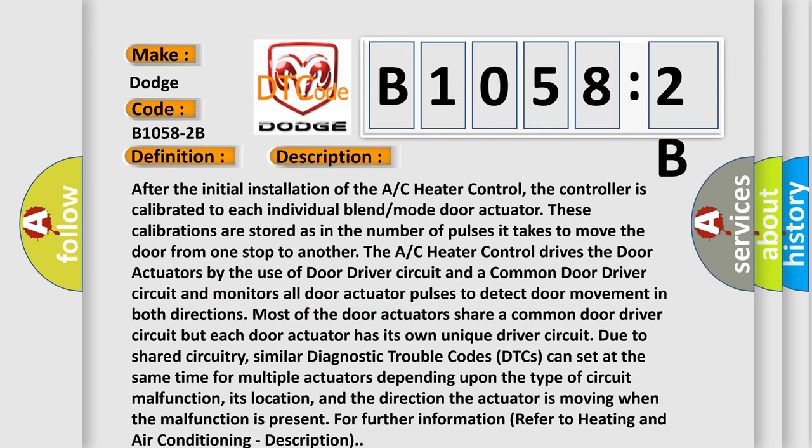After the initial installation of the AC heater control, the controller is calibrated to each individual blend mode door actuator. These calibrations are stored as in the number of pulses it takes to move the door from one stop to another.